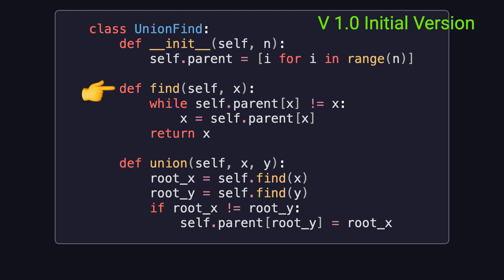Next is the find method. We use it to find the representative, or root, of the set that an element belongs to. We keep checking the parent of the current element until we find one whose parent is itself. That's when we've found the root. Now let's look at the union method. The goal here is to merge the sets that contain elements x and y. First, we find the root of each element. If the two roots are different, we simply make one root point to the other. In this case, we make root_y point to root_x, meaning the two sets are now merged into one.